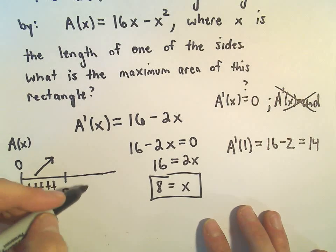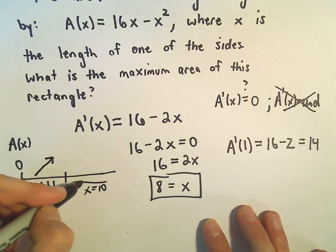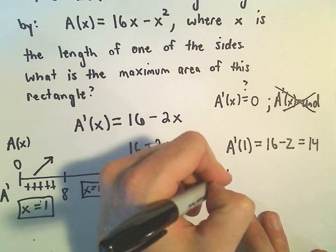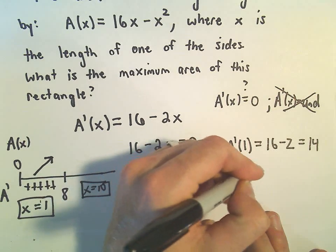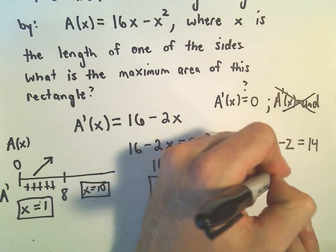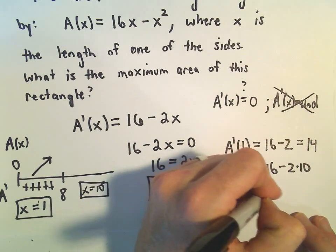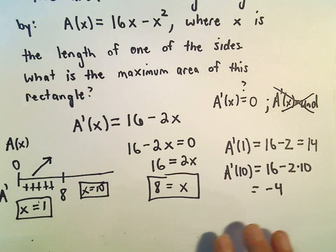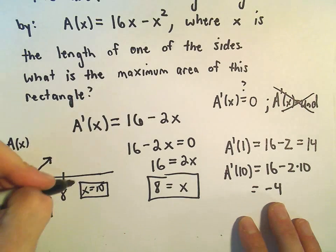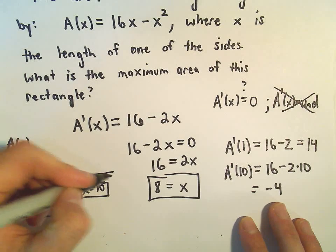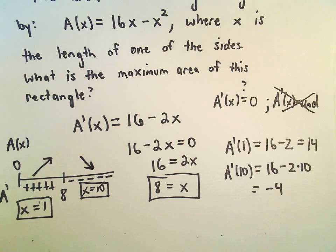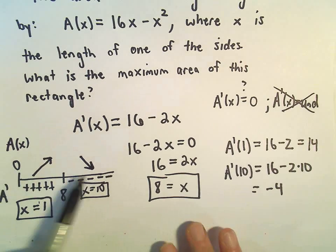Then I'm going to take any number bigger than 8. Maybe I'll use 10. Well, if we plug that in, A'(10), we'll get 16 - 2 times 10. Well, that's going to be 16 - 20, or negative 4. Again, the important thing here is we're getting a negative number. And that tells me now that the original function is decreasing.